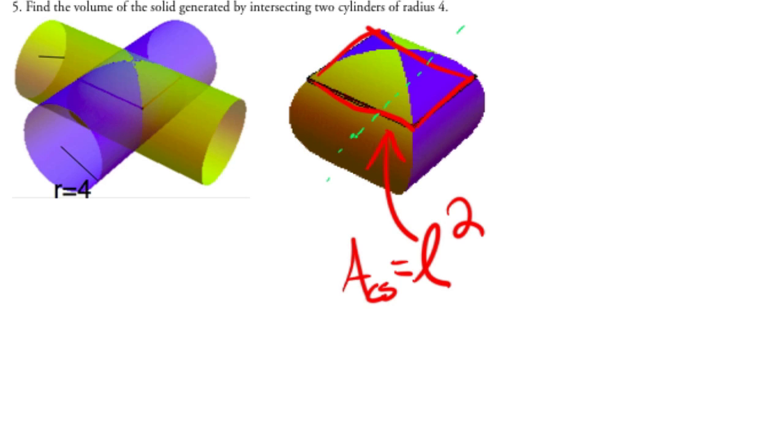And so then that means that this would be located at distance y. So the distance from the center, the axis, which would be right here, up to the cross-section, the square one, would be y.